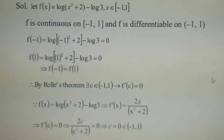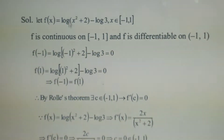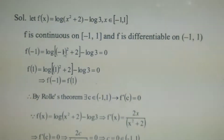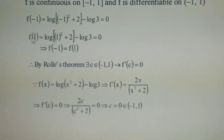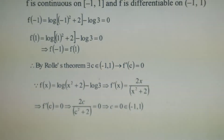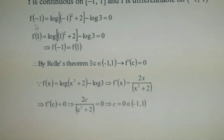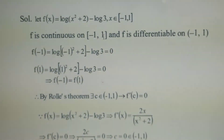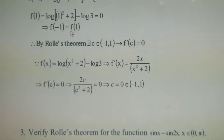Now check f(a) = f(b). The a value is -1 and b value is 1. Find f(-1): replace x with -1 — log((-1)² + 2) - log 3 = log(1 + 2) - log 3 = log 3 - log 3 = 0. Find f(1): replace x with 1 — log(1² + 2) - log 3 = log 3 - log 3 = 0. Therefore, f(-1) = f(1).